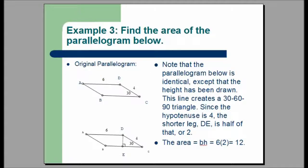In example three, you are asked to find the area of the parallelogram below. This is a more difficult problem. Look at the original parallelogram. You are told that segment AD equals 6, therefore BC equals 6. We're told that segment DC has a length of 4 and that there's a 30-degree angle. Notice that we are not given the height of the parallelogram and we need that to find the area. As a general piece of advice, whenever you are given a figure and asked to find the area and feel like you haven't been given enough information, try drawing a line.